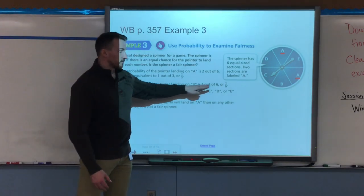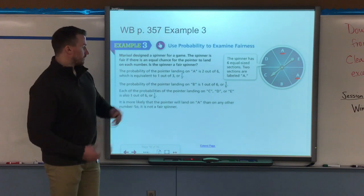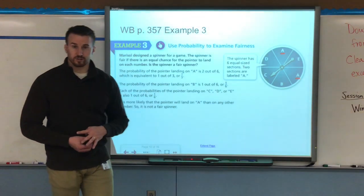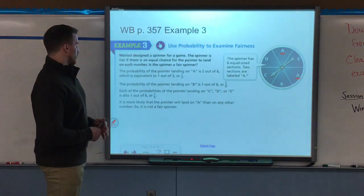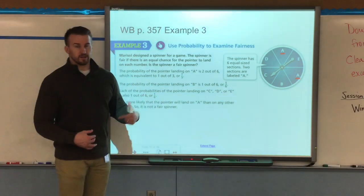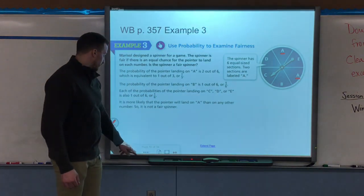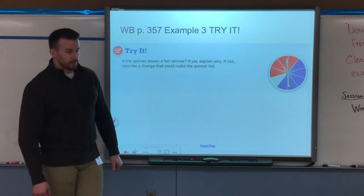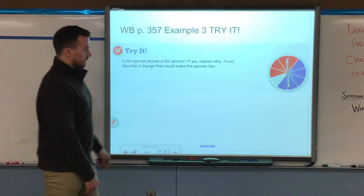Pointer B is one sixth. Each one for C and D and E are also one sixth. So A has a greater chance, so it's more likely that the pointer will land on A than any other letter. So no, it's not a fair spinner.